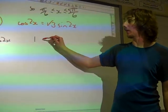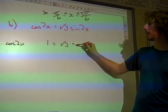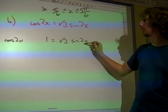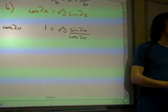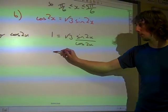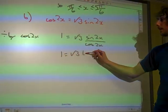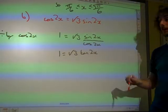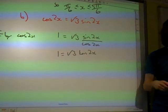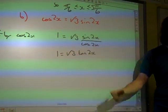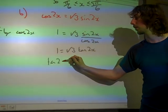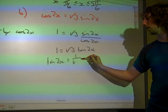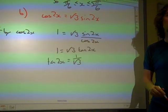That will give us 1 over here is root 3 sine(2x) over cos(2x). And so we've got 1 equals root 3 tan(2x) out of that. And that's what we needed to do to get it in terms of just one of the identities. So tan(2x), we're saying, is 1 over root 3.